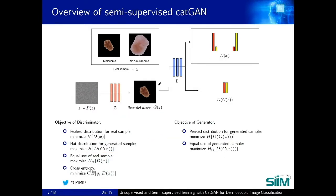Now for the semi-supervised training of CATGAN, the extension is very straightforward. We just add another supervised objective to D, which is to minimize the cross entropy of the predicted label distribution and the ground truth label distribution for the labeled sample. All the other objectives remain the same.